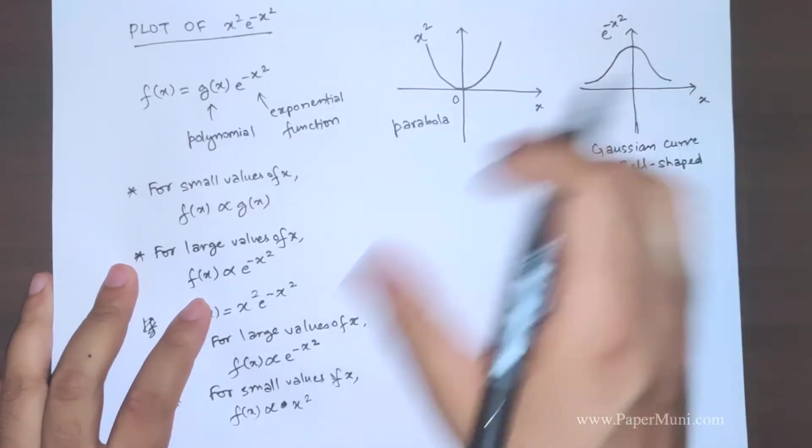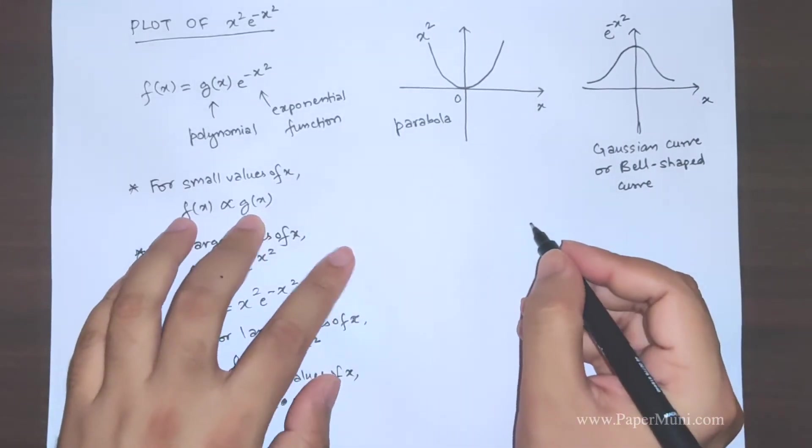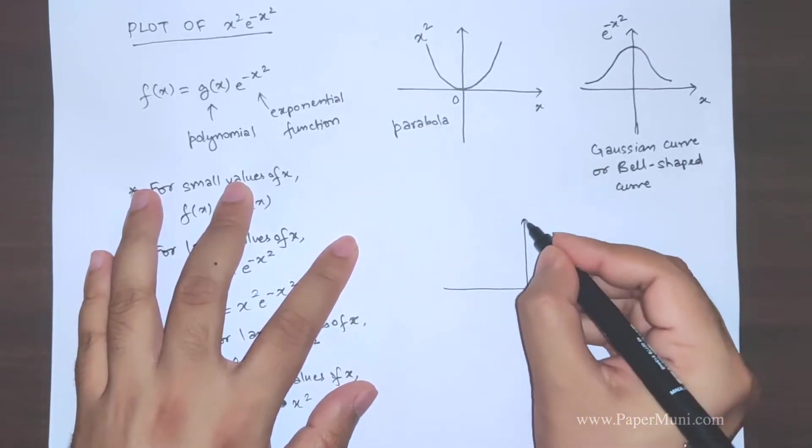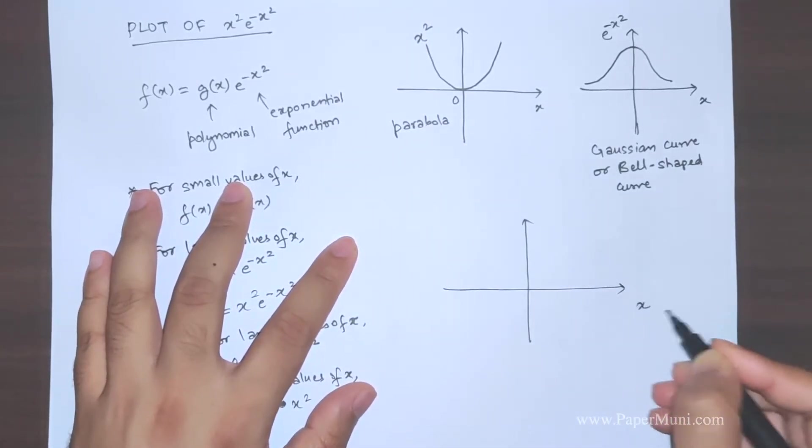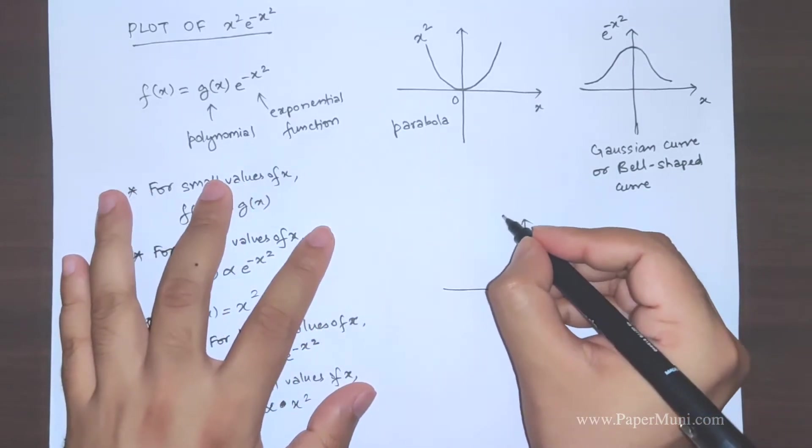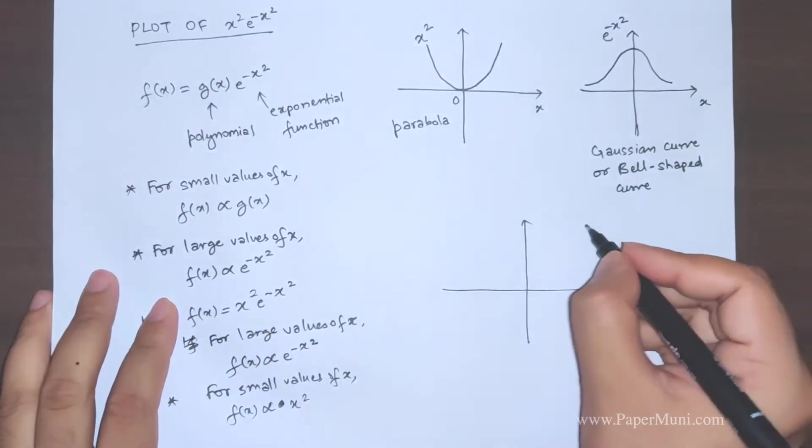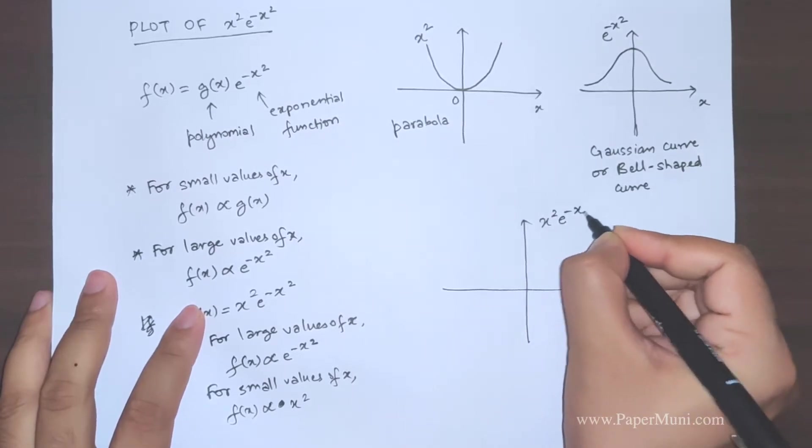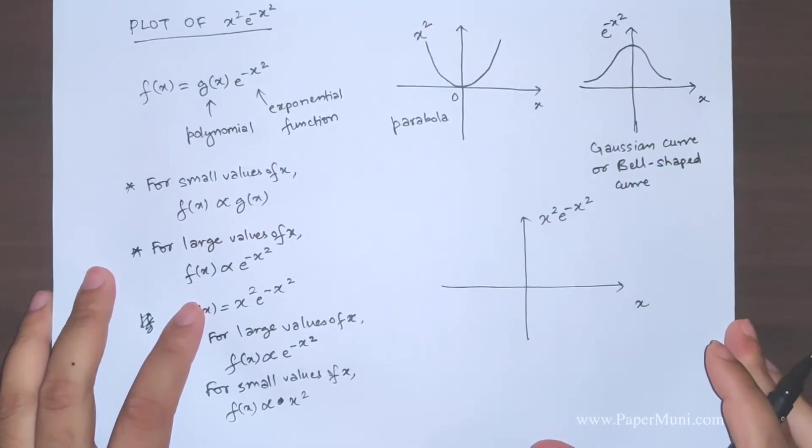Now we need to combine these two graphs for different ranges of x. So this is the x-axis. Now we have to plot the given function which is exponential minus x squared.